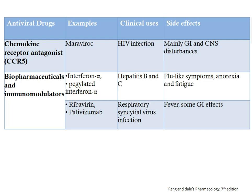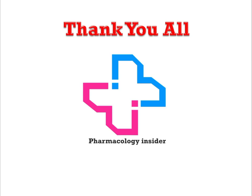We also have biopharmaceuticals and immunomodulators used in HIV infection, such as interferon alpha, pegylated interferon alpha, and ribavirin, mainly used in hepatitis B and C, as well as respiratory syncytial virus infection. Side effects include flu-like symptoms, anorexia, fatigue, sometimes fever and gastrointestinal effects. With this we have discussed the pharmacology, side effects, and clinical uses of antiviral drugs along with the pathogenesis of HIV infection. Thank you all — please do like, share, and subscribe to Pharmacology Insider.